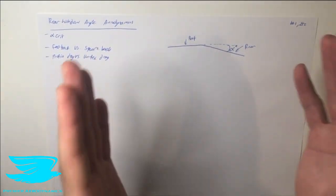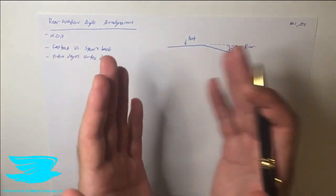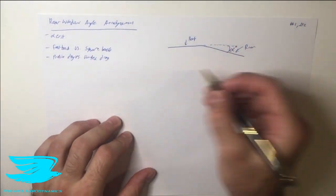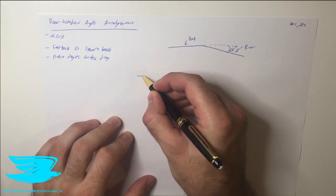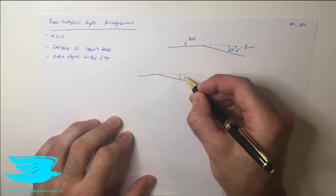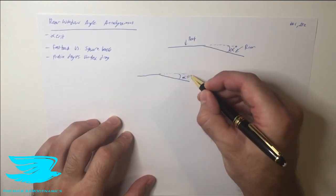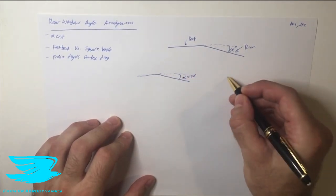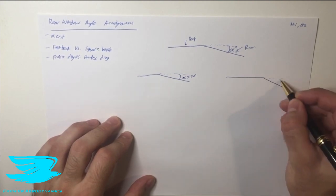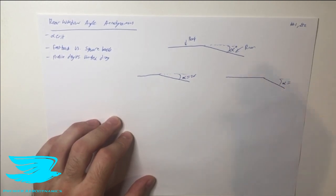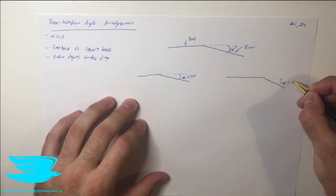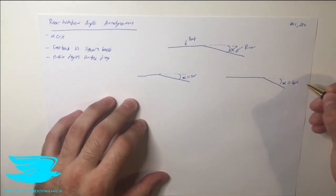The critical angle is very important because it determines when the aerodynamics changes dramatically. Let's say we have two different rear window setups. The first is a fastback at about 20 degrees. The second has a significantly greater angle — technically still a fastback but moving towards a square back — at about 40 degrees.